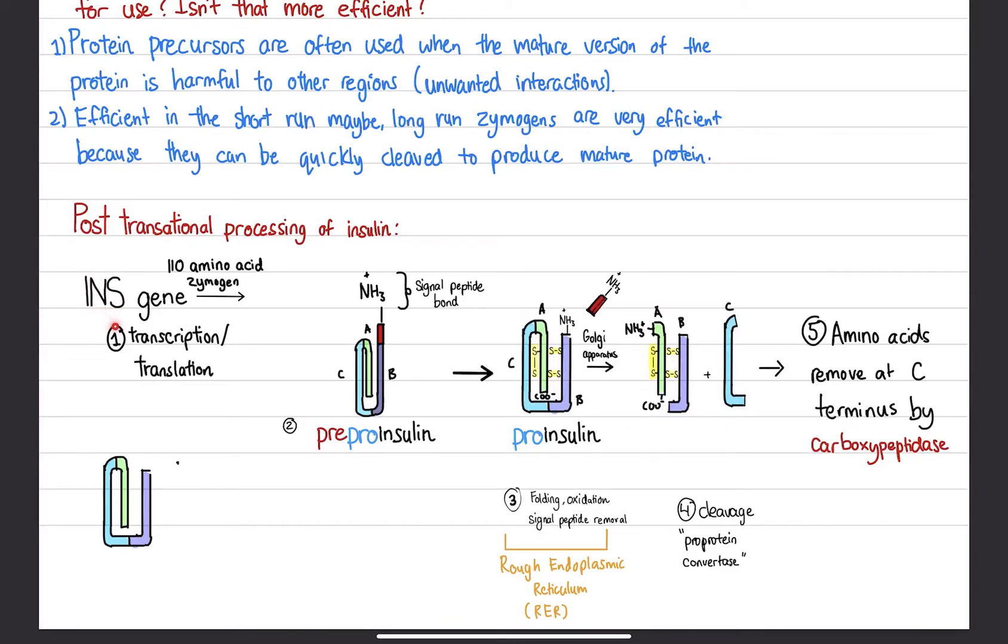So we have the INS gene, which is responsible for the primary transcript of the pre-pro-insulin. Pre-pro-insulin, and that's a 110 amino acid polypeptide right over here. So once this is made, we notice we have something called the signal peptide bond.